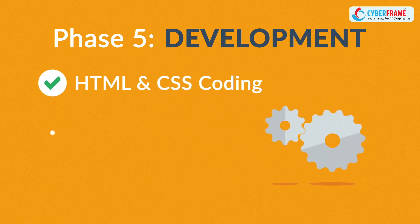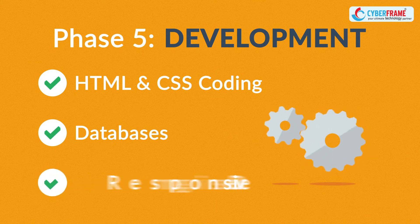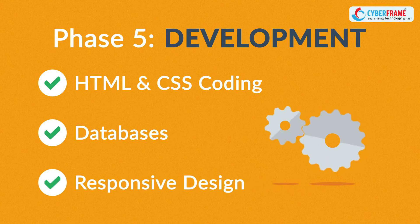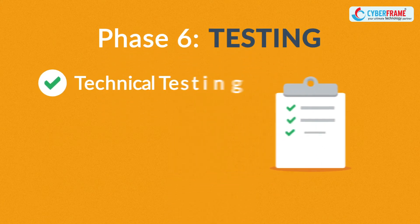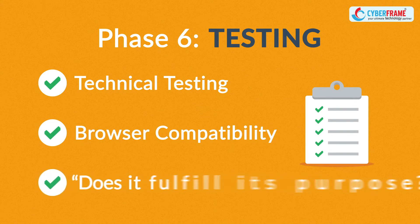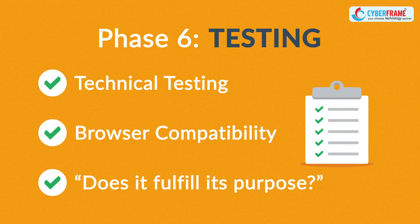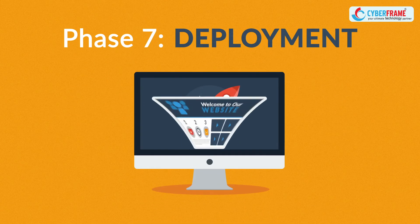Phase five: Development. Here we actually create the website using the Hypertext Markup Language and Cascading Style Sheets, with some help from databases and other technologies as well if needed. Our websites can be made accessible to mobile devices too. Phase six: Testing. We test all the technical features like coding, scripts, and compatibility with major browsers, but we also ask ourselves if the website really fulfills its purpose.